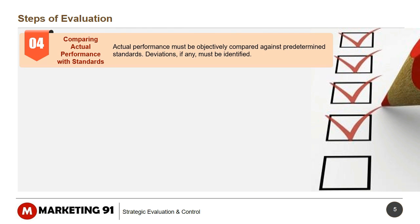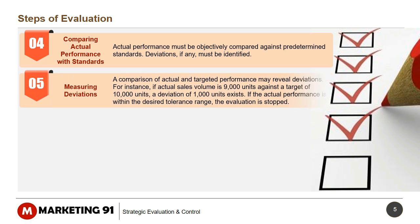Fourth, comparing actual performance with standards: actual performance must be objectively compared against predetermined standards. Deviations, if any, must be identified. Fifth, measuring deviations: a comparison of actual and targeted performance may reveal deviations. For instance, if actual sales volume is 9,000 units against a target of 10,000 units, a deviation of 1,000 units exists. If actual performance is within the desired tolerance range, the evaluation is stopped.